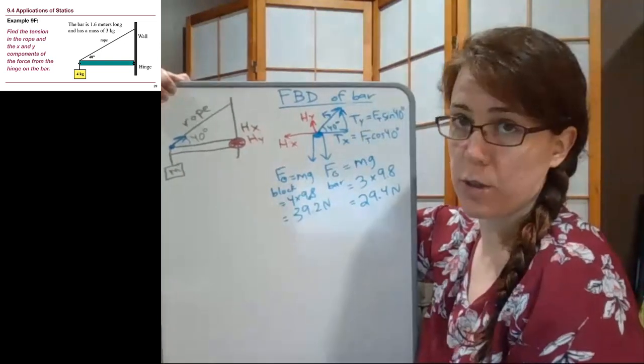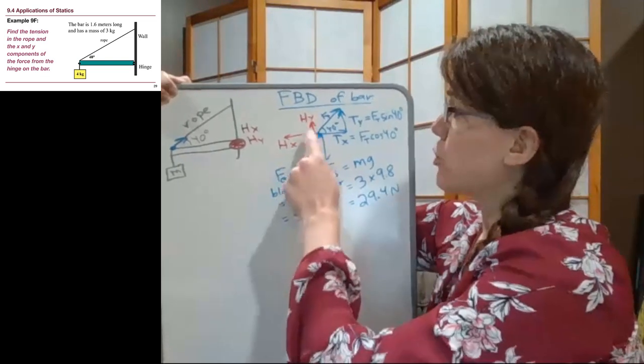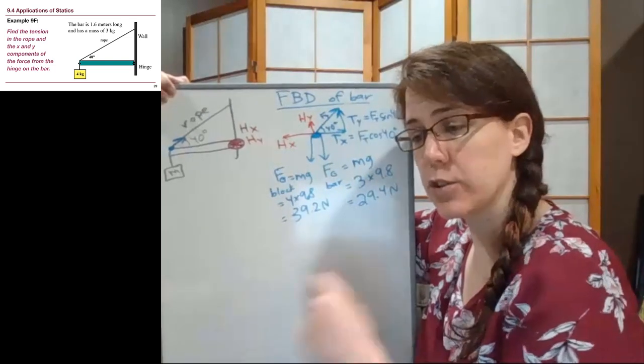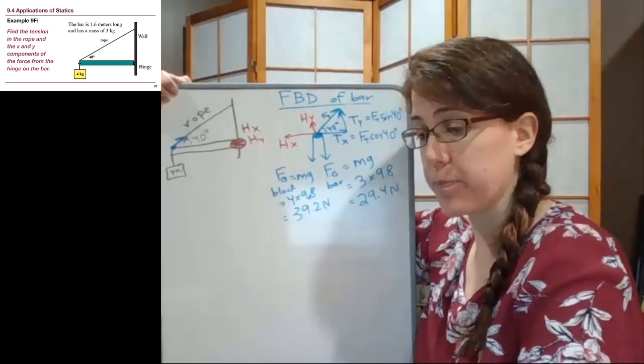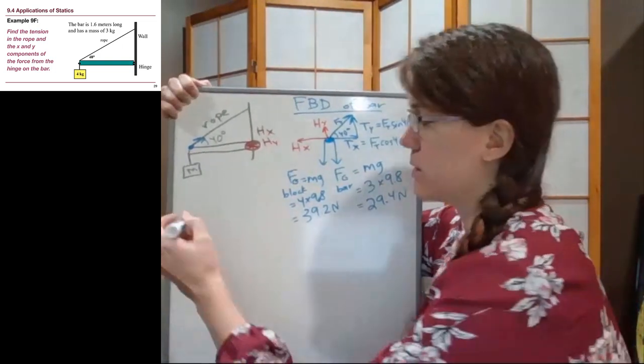That now is all of the forces acting on the bar. It is also worth noting that the two forces that I drew in red here are acting at the hinge, which means now that we're transitioning to our torque diagram, we do not need to put those forces into our torque diagram because they're happening at the axis.